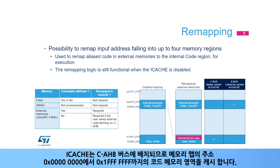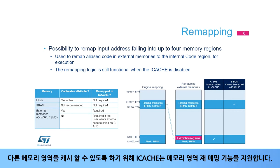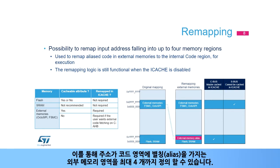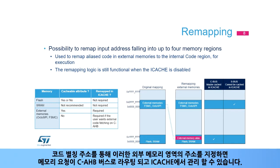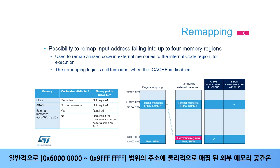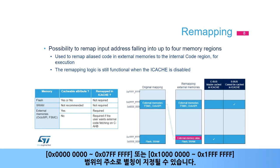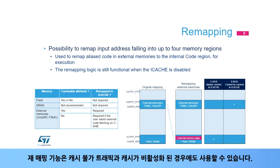iCache is placed on the C-AHB bus and thus caches the code memory region ranging from address 0x0 to 0x1FFFFFFF of the memory map. In order to make some other memory regions cacheable, iCache supports a memory region remapping feature. Up to four external memory regions can be defined, whose addresses have an alias in the code region. Addressing these external memory regions through their code alias address allows the memory request to be routed to the C-AHB bus and to be managed by iCache. Typically, any external memory space physically mapped in the range 0x60000000 to 0x9FFFFFFF can be aliased with an address in the range 0x0 to 0x07FFFFFF or 0x10000000 to 0x1FFFFFFF. The remapping functionality is also available for non-cacheable traffic and when cache is disabled.